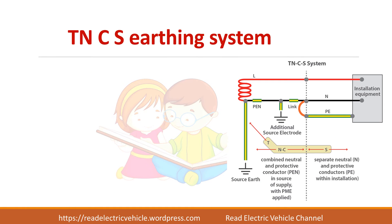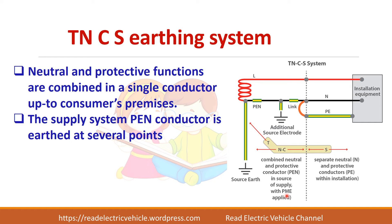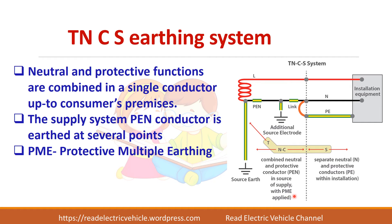In the TNCS earthing system, there are two separate conductors at the consumer side, whereas they are combined into a single one at the source side. This system uses protective multiple earthing, meaning the system is earthed at several points along the conductor.